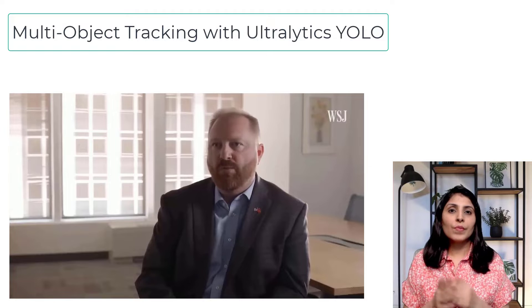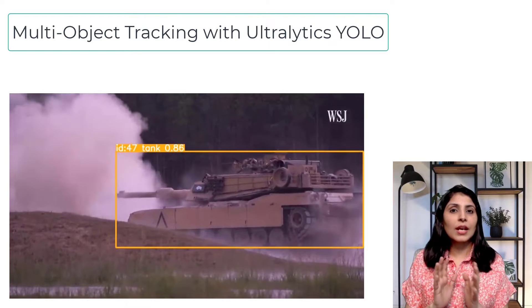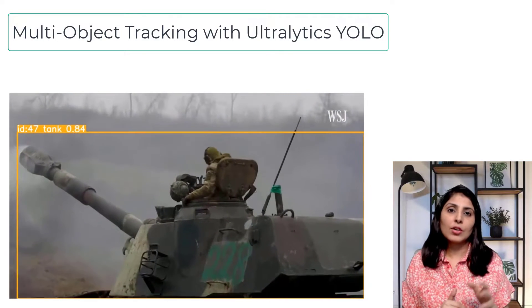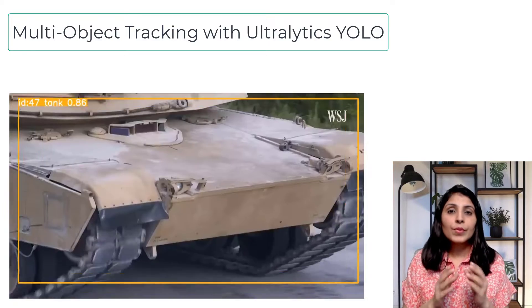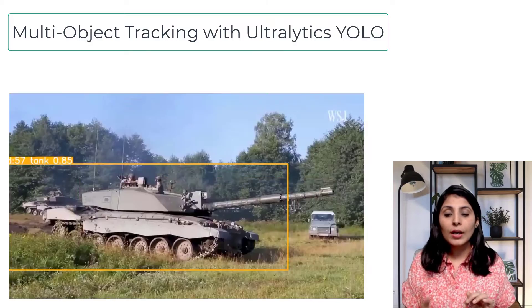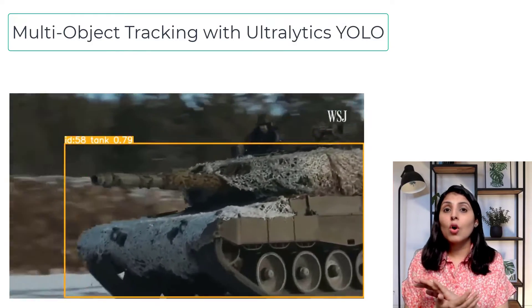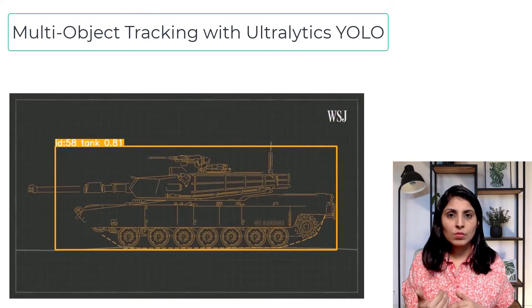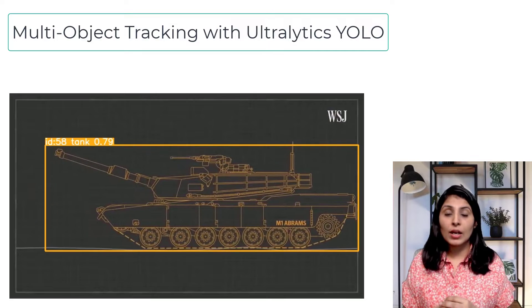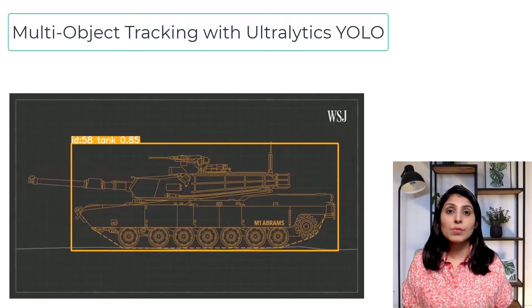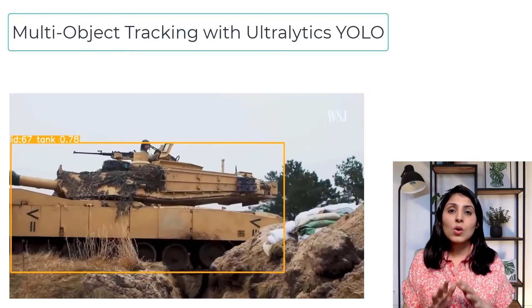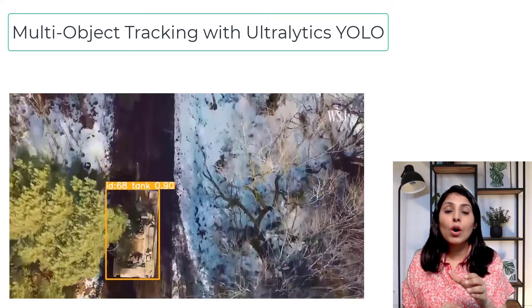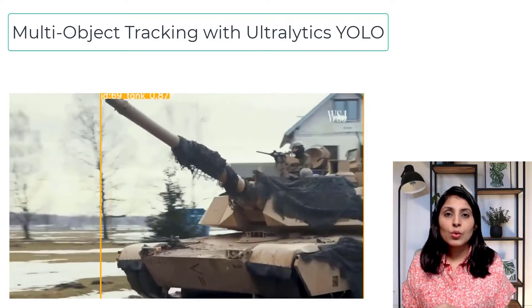First, what is tracking? Tracking means you detect the object in the first frame and then in subsequent frames you track that object using a tracking algorithm. Usually, to run tracking, you first install all the requirements of your object detection algorithm and then install the requirements of the object tracking algorithm. For example, if you want to use DeepSORT, you install all the required libraries, copy the DeepSORT code alongside your detection code, and make them work together.